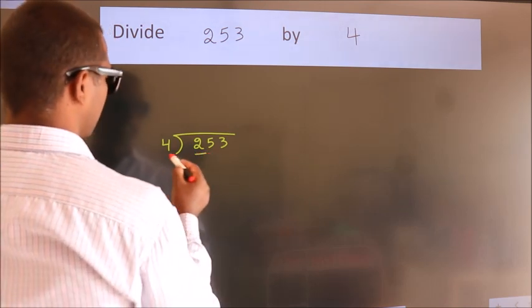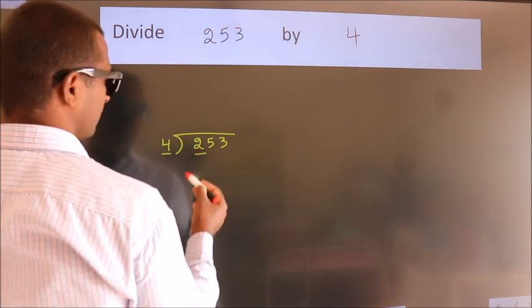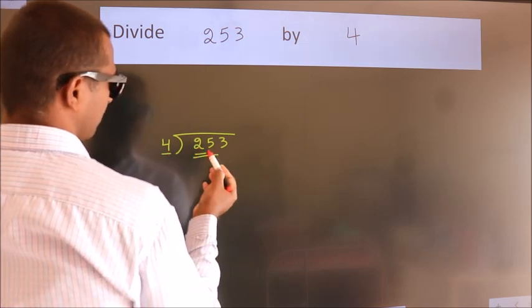Here we have 2. Here 4. 2 smaller than 4. So we should take 2 numbers. 25.